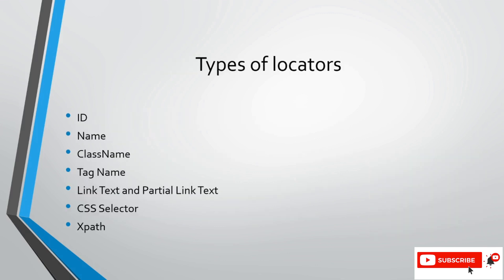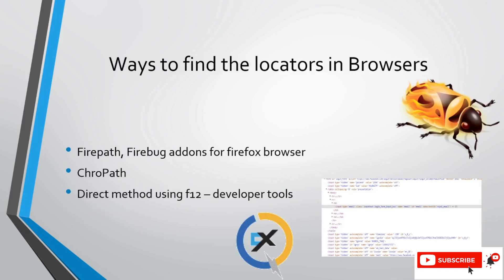The types of locators we have are: ID, Name, Class Name, Tag Name, Link Text, Partial Link Text, CSS Selectors, and XPath. Based on our requirement we can use any of these or a combination of different locators. Just as a person has unique identities, these are the most used locators in Selenium.